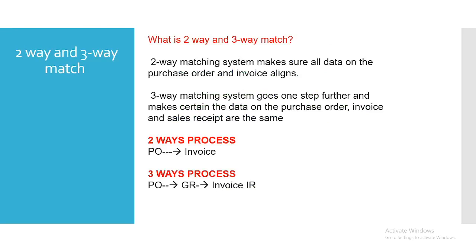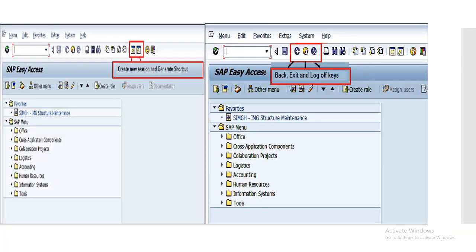What is two-way and three-way matching? In a two-way matching system, data on the purchase order and invoice must align. In a three-way matching system, it goes one step further and ensures that the data on the purchase order, invoice, and goods receipt are all the same. In two-way matching you have purchase order to invoice with no GR, while in three-way matching you have purchase order, goods receipt, and invoice (IR).